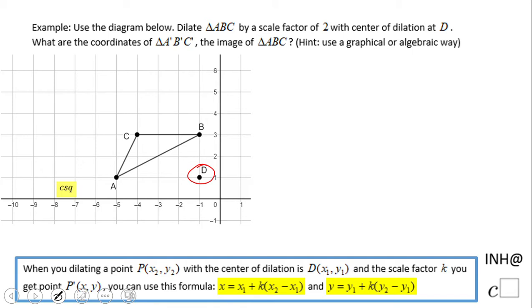First, I'm going to show you the algebraic method. Let's dilate point C by a scale factor of 2 with center of dilation at D. We'll use this formula: x = x₁ + k(x₂ - x₁), and you're going to plug the values in.